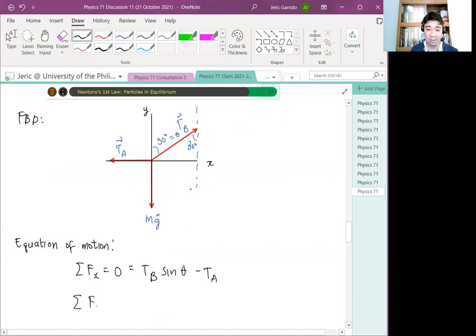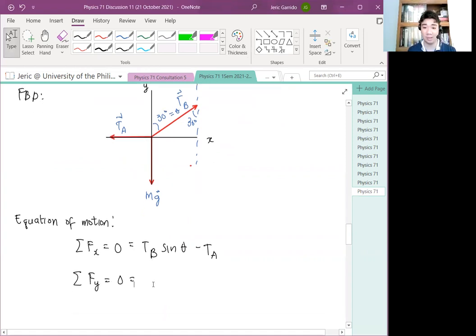And then, summation of forces acting on y. Also, this is obviously zero. But this is now equal to what? Note here that the x components, the two are opposing each other. For y, there's no y component in TA. So, therefore, I get TB cosine theta minus mg. Okay? Did you get these two equations?